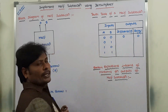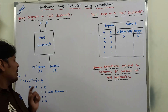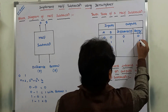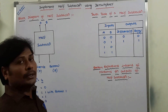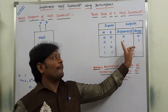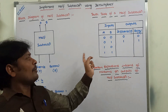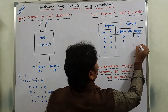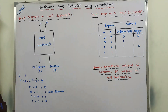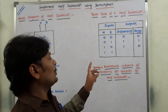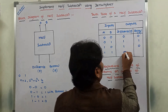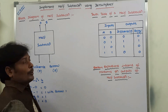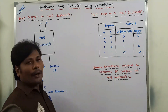For the third combination A=1, B=0: 1 minus 0 gives difference 1, no borrow generated, so borrow is 0. For the fourth combination A=1, B=1: 1 minus 1 equals 0, so difference is 0, no borrow generated, borrow is 0. This is the complete truth table of the half subtractor.